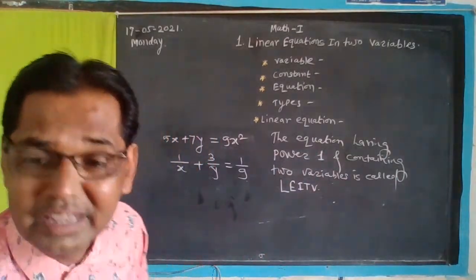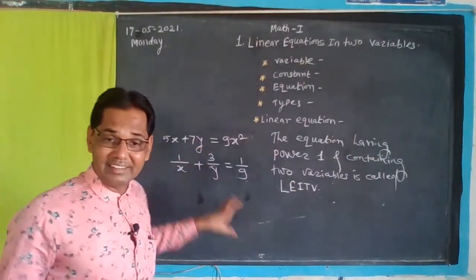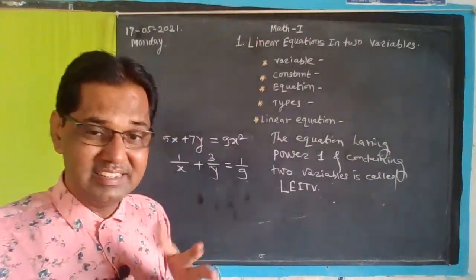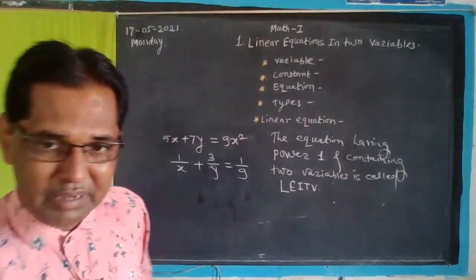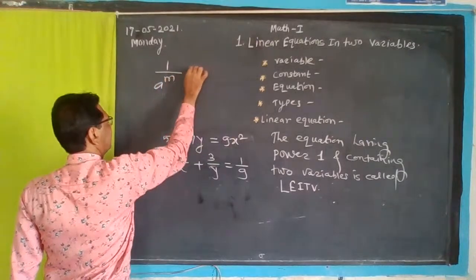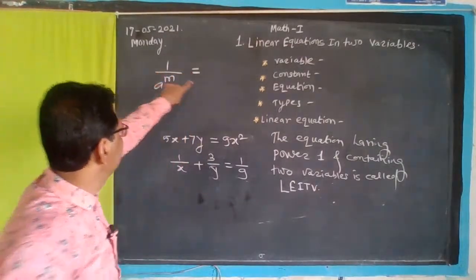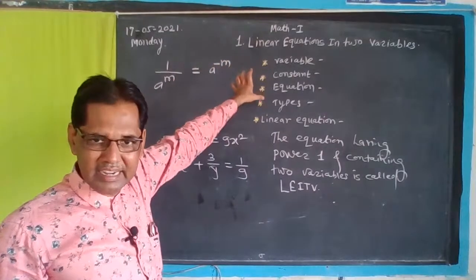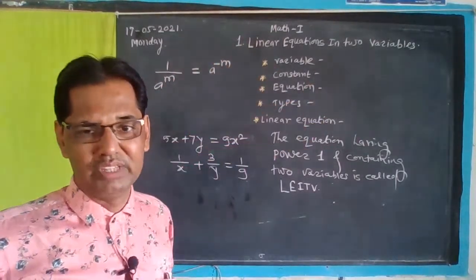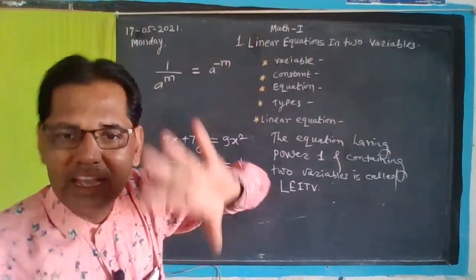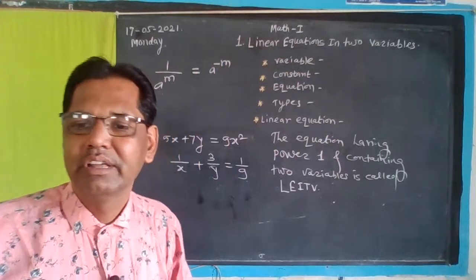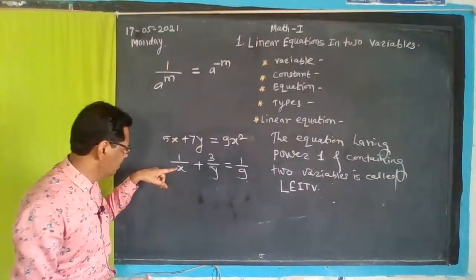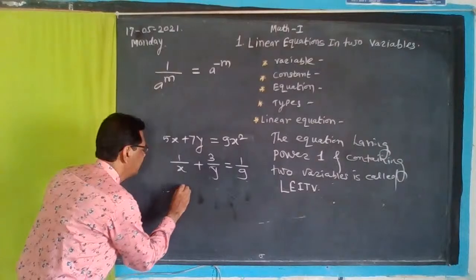Variables can have power minus — very interesting. The index rule applies here: if it is like 1 upon a raised to m, then by the rule of indices it becomes a raised to minus m. So the numerator index moves down and becomes negative as per the rule of indices. Therefore, rearranging using this rule, the power of the variable will be negative.